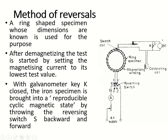With the galvanometer key closed — this is the ballistic galvanometer, and we are connecting a key across it. The circuit was already explained in the previous class. With the galvanometer key closed, the iron specimen is brought into a reproducible cyclic magnetic state. It is achieved by throwing the reversing switch S back and forth.